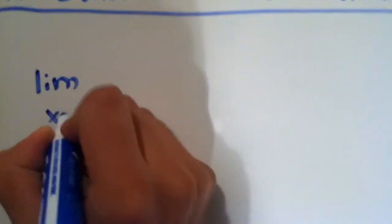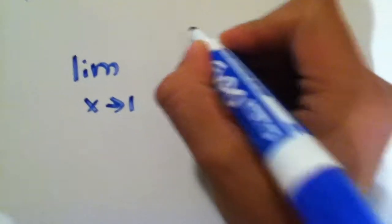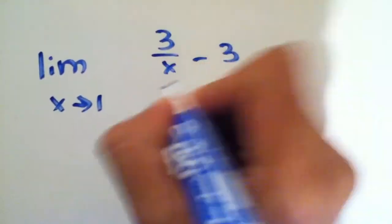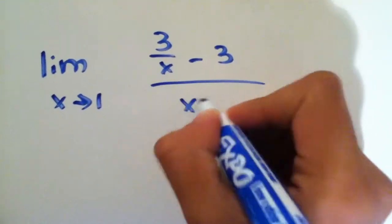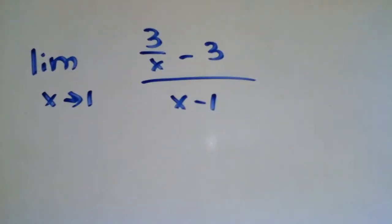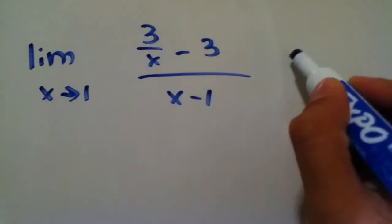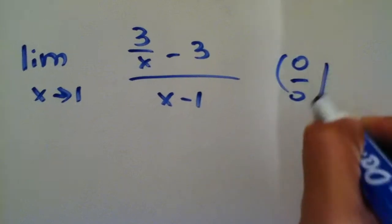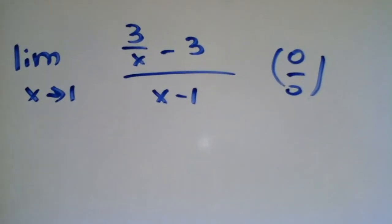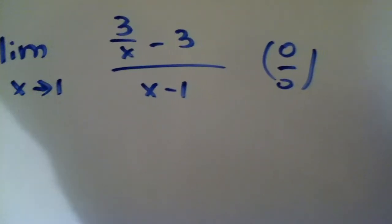Limit as x approaches 1, 3 over x minus 3 over x minus 1. So clearly if you put 1 into here, top and bottom, it'll become 0 over 0. And when that situation arises, we know we have to use L'Hopital's rule.